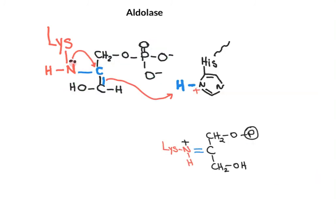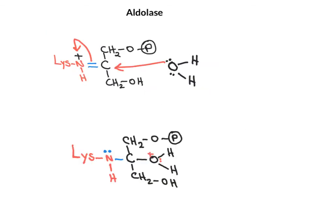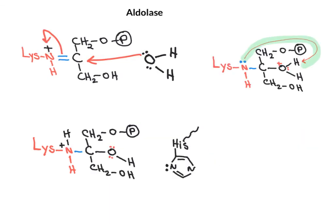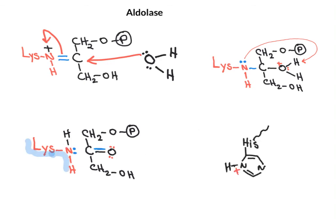Histidine protonates the enamine, yielding an iminium cation — another Schiff base. The last step is hydrolysis of this iminium cation to release dihydroxyacetone phosphate and regenerate the free active site of the enzyme. Because the positive charge on nitrogen is more favorable than on oxygen, we have another proton shift: lysine gets protonated and histidine deprotonates the oxygen between the two carbons to form the carbonyl, releasing the free enzyme and dihydroxyacetone phosphate.